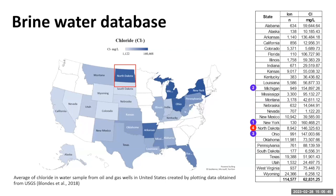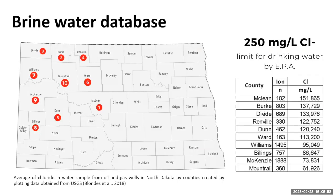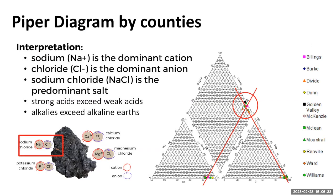If we evaluate the concentration of chloride in the brine water in North Dakota compared to other states around the USA, we are number four in chloride concentration — and that is pretty high. For the EPA, the limit is 250, and we are over that number. The highest chloride concentration is in the brine water from this part of the state. If you evaluate the ions and cations in that brine water, the predominant cation is sodium and the predominant anion is chloride. So the principal salt we have in this brine water is sodium chloride.